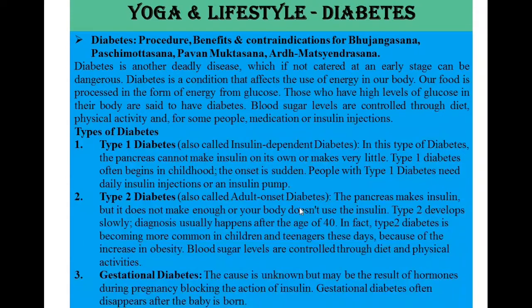Type 2 diabetes, also called adult-onset diabetes. The pancreas makes insulin but it does not make enough, or your body does not use insulin properly. Type 2 diabetes develops slowly. Diagnosis usually happens after the age of 40. In fact, Type 2 diabetes is becoming more common in children and teenagers because of the increase in obesity. Blood sugar levels are controlled through diet and physical activities.